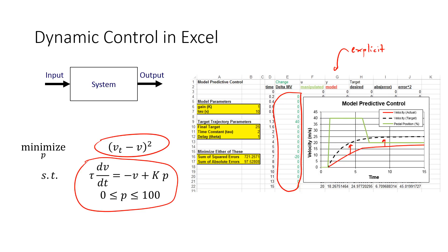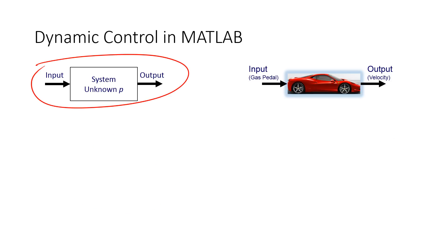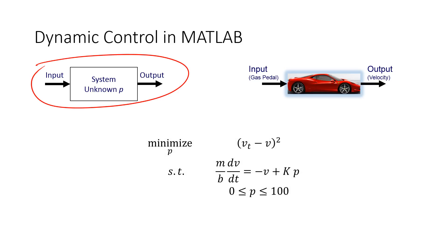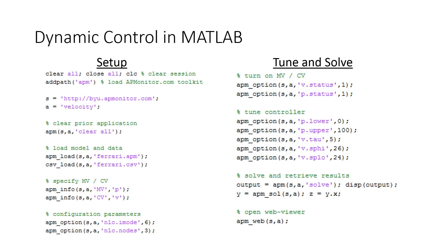So we had to solve for the explicit solution and put that in column G. In MATLAB, though, we can put in the differential equation in time derivative form, just as it appears right here, and then solve this problem. Here's just some of the code in MATLAB — we're going to set up the problem, then this is the tuning of the controller, then solving it and opening up a web viewer.